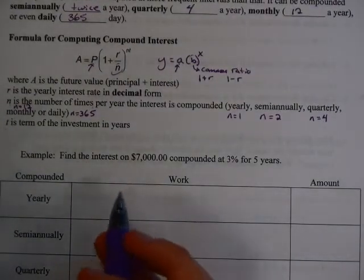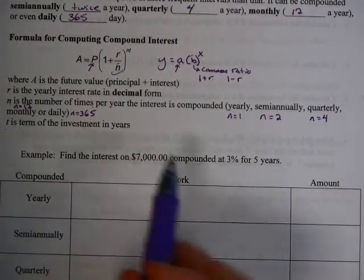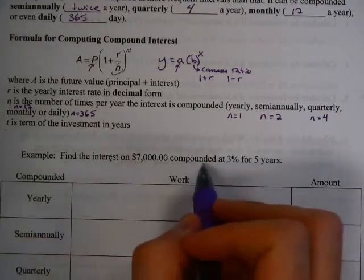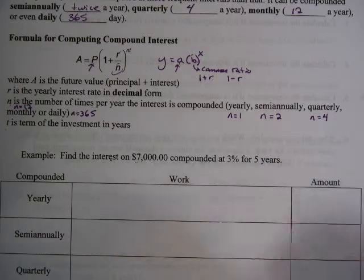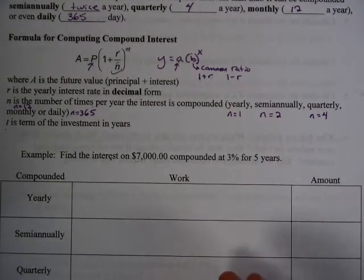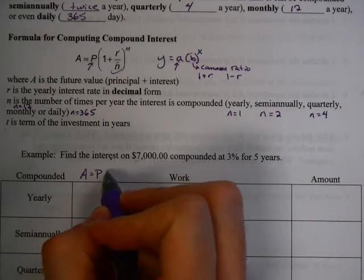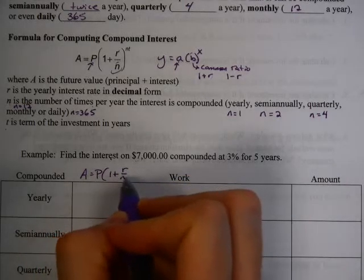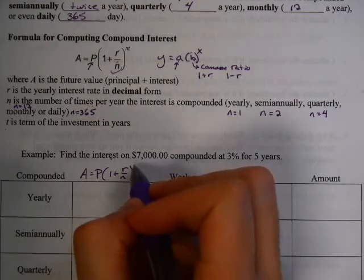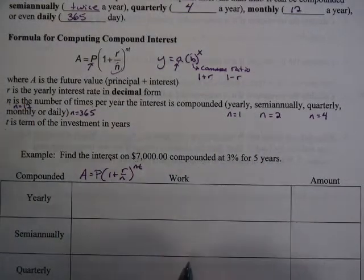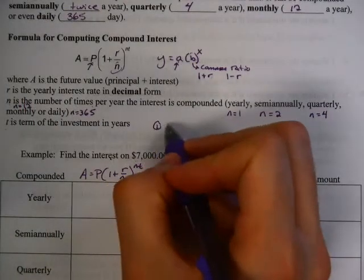So let's take a look at an example here. Find the interest on $7,000 compounded at 3% for 5 years. First things first, you're going to want to write out your formula. And then your steps are as follows. First step that you're going to want to do, define the variables.